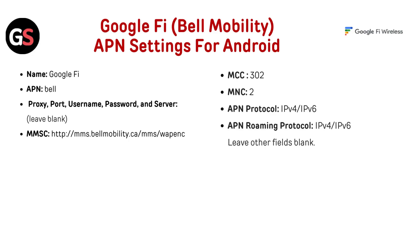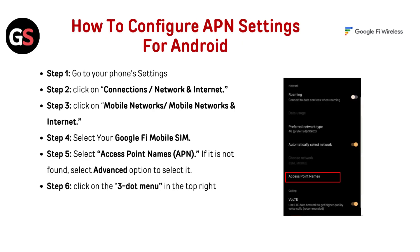Google Fi Bell Mobility APN settings for Android: Name — Google Fi, APN — Bell. Proxy, port, username, password, and server leave blank. MMSC — HTTP m.uscellular.com/webenc. MCC — 302, MNC — 2. APN Protocol — IPv4 or IPv6. APN Roaming Protocol — IPv4 or IPv6. Leave other fields blank.